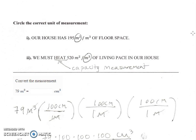Volume measurements are more related to capacity — so how much we need to fill a space, like how much heat we can put in a space or how much of a liquid we can put in a space. So in these examples, if it's talking about floor space, then that's an area measurement.